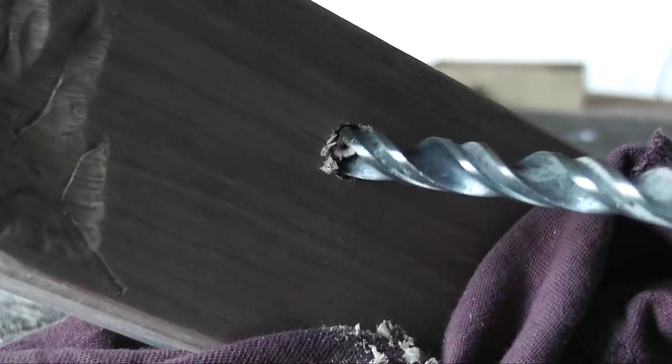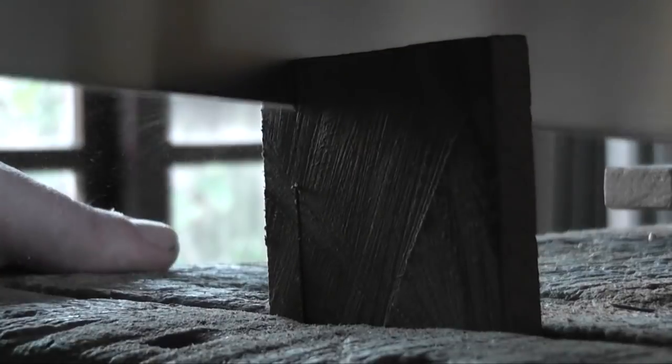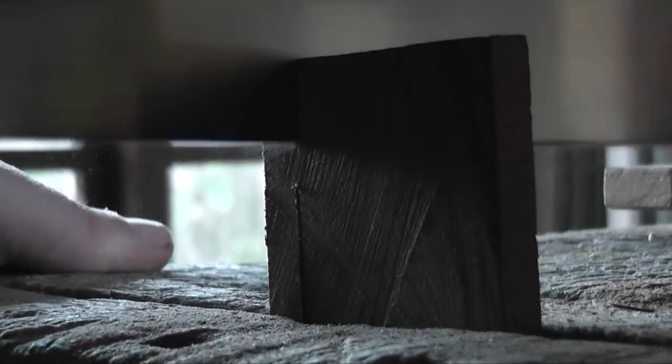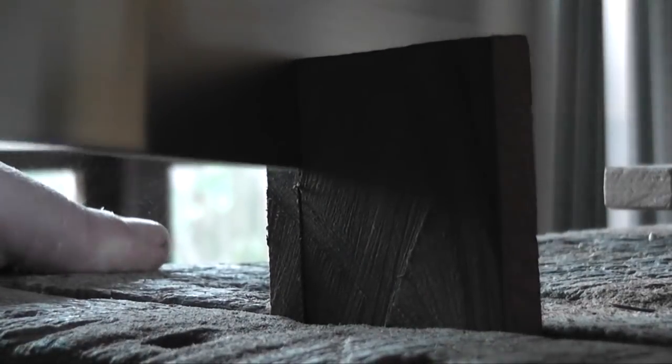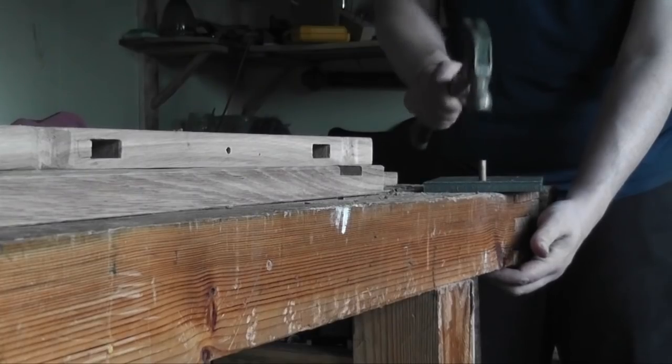So now I'm figuring out the dowel holes for the draw bore. Just letting the point of the bit break through the other side and then I drilled back in through the other side to make sure there was no breakout on the bottom. And here I am cutting the black walnut into little pieces to make dowels. Punching it through my dowel plate.